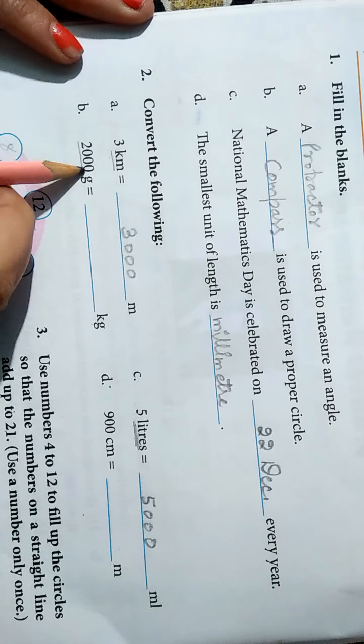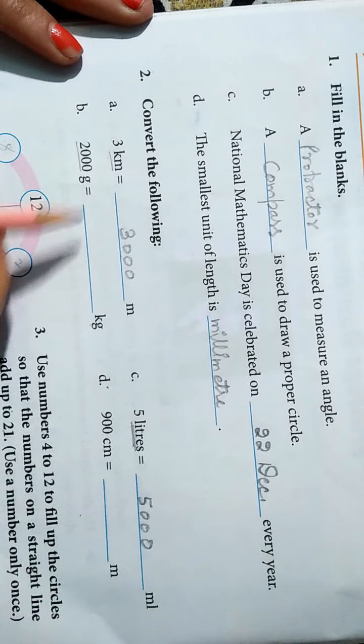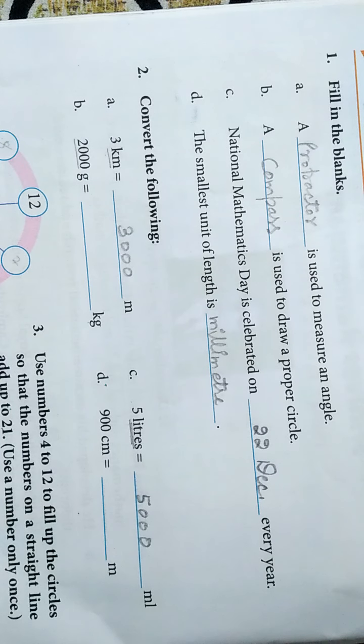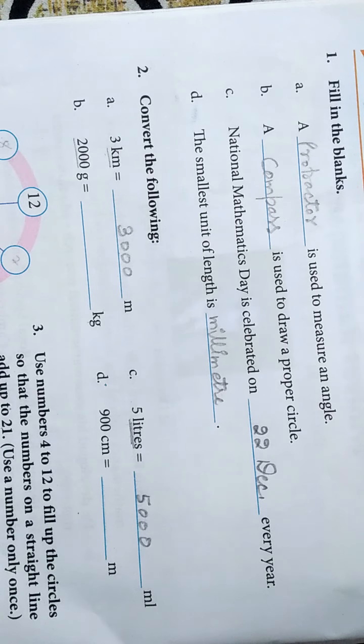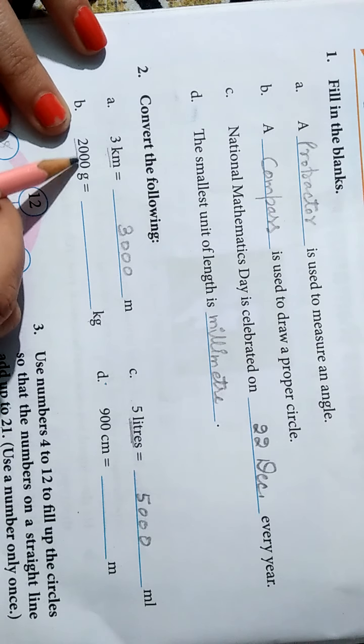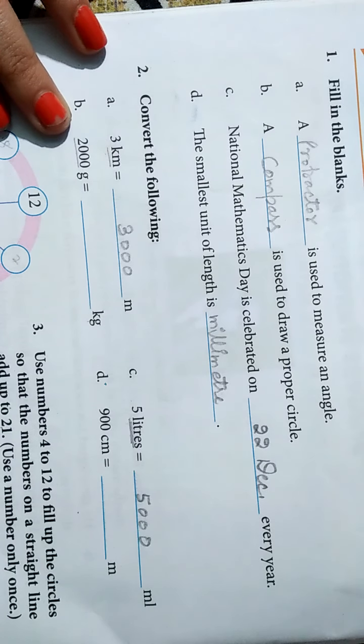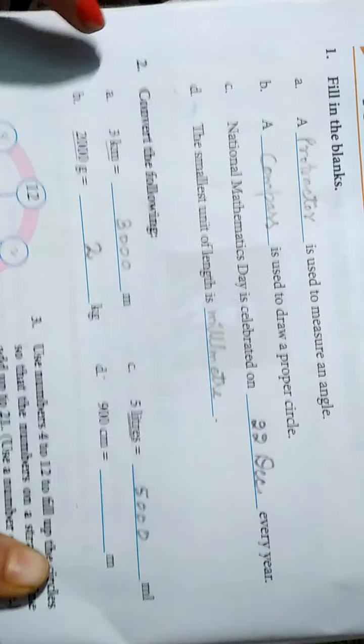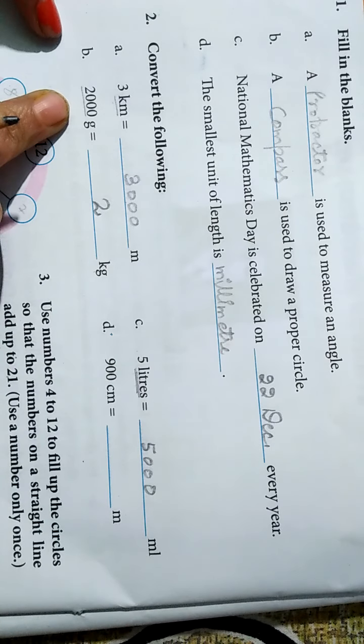2000 gram to kilogram banana hai. Ye chhote se bade me jana hai. Mani kya batata? Chhote ko niche rakhte hain aur bade ko upar. Ab niche se upar jana hai? Difficult. Means divide karenge. To 1 me kitna hota hain? 1000. To kitna hota hain? 2 kilogram. To 2 kilogram is equal to 2000 gram.